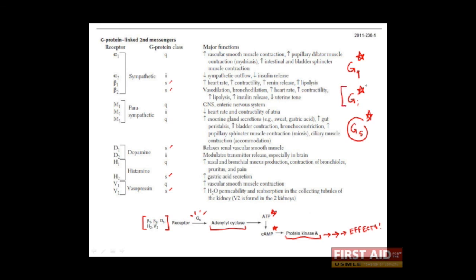Let's talk about the final class, the GI class. The GI class mediates the effects of the alpha-2, M2, and D2 receptors, which you can remember with the mnemonic MAD2s. When these receptors bind to their respective ligands, the GI protein is activated. But instead of activating adenylyl cyclase, it inhibits adenylyl cyclase, which then results in a reduction of cyclic AMP and a reduction in the activity of protein kinase A. You can see how the GI protein class and the GS protein class have opposing effects on the adenylyl cyclase enzyme.